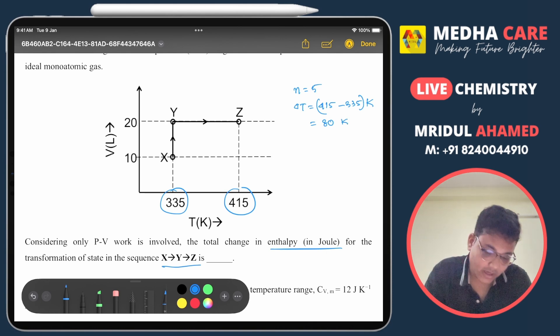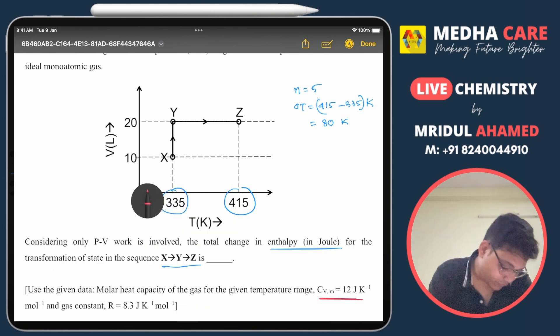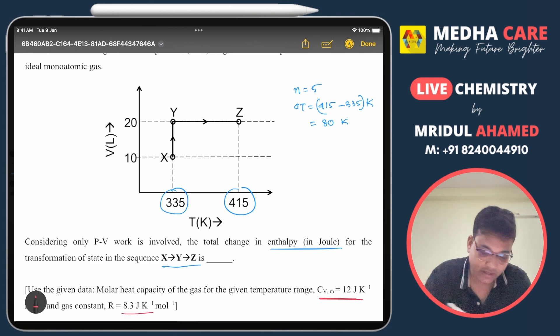Okay, and here one data given: CV, molar heat capacity at constant volume, given is 12 Joule per Kelvin per mole, and R also given 8.3.